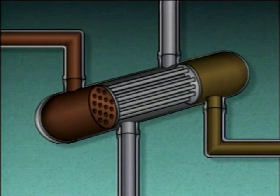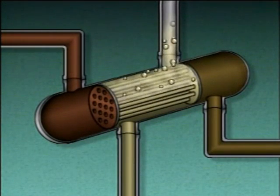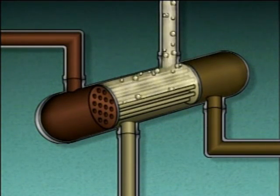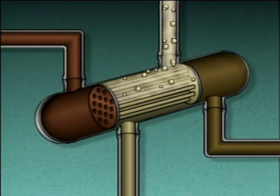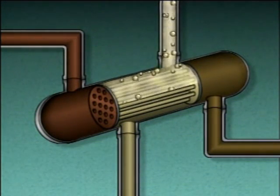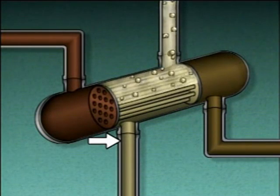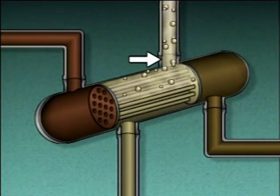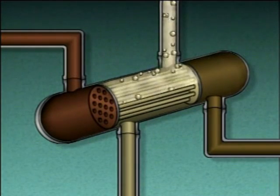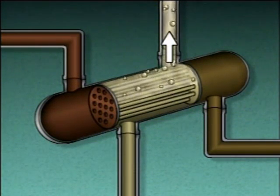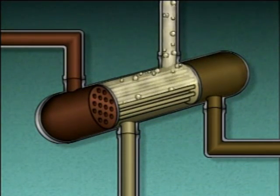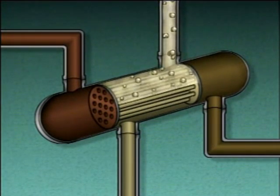The process liquid from the distillation column enters the reboiler's shell and passes around the tubes. Heat from the hot oil vaporizes part of the process liquid. The mixture of liquid and vapor is then returned to the distillation column. The flow of the process liquid and vapor is caused by the difference between the density of the liquid entering the reboiler and the density of the heated mixture returning to the distillation column. The heated mixture in the reboiler is less dense than the liquid coming in from the column, causing the heated mixture to rise out of the reboiler and return to the column, resulting in natural circulation between the reboiler and the distillation column.